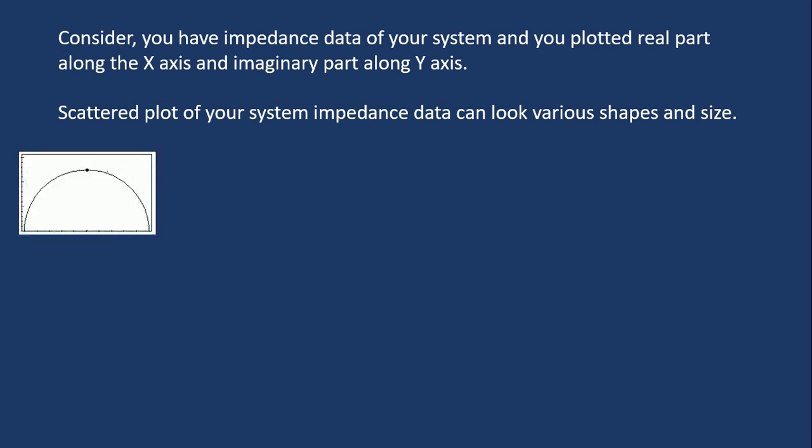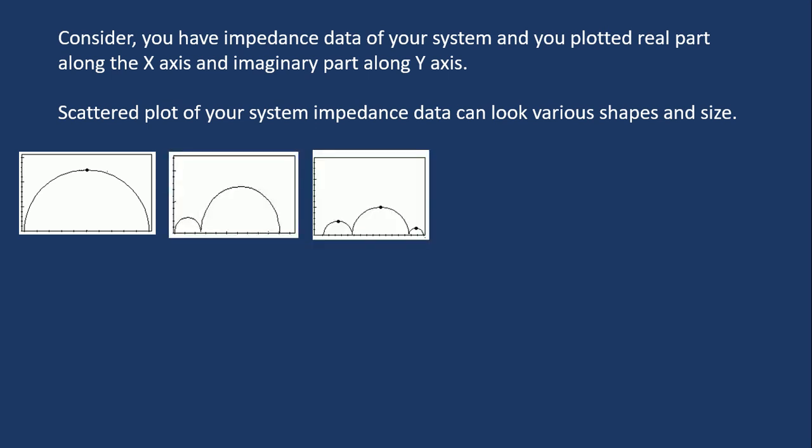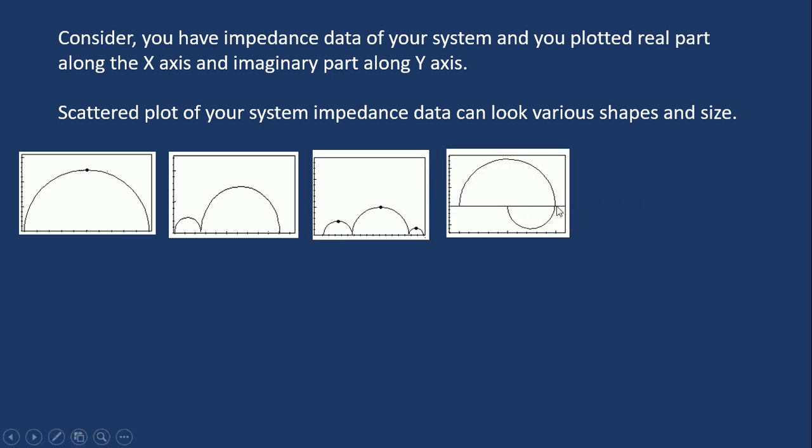So now you have scattered plot of your system impedance data. It can look like various shapes and sizes. For example, this may look like one semicircle or two semicircles or three semicircles, or one semicircle. And in the lower frequency part there is a bend and the semicircle looks like this one or it can look like this.